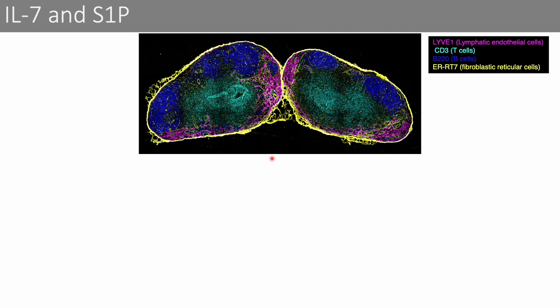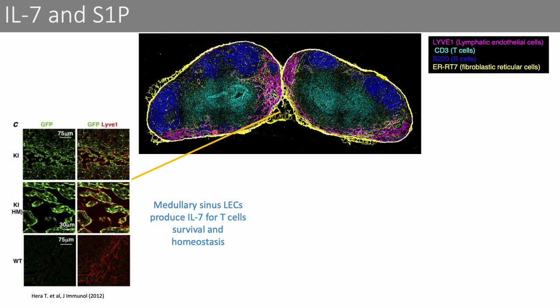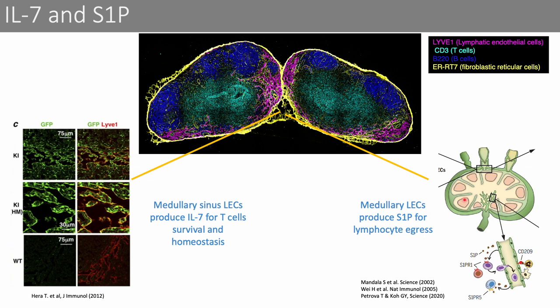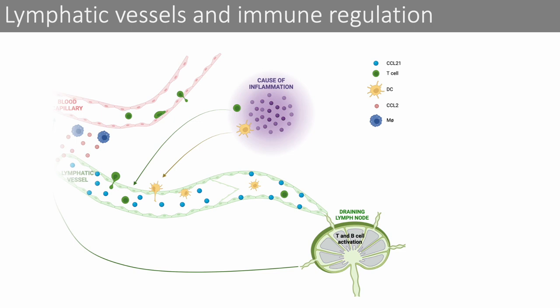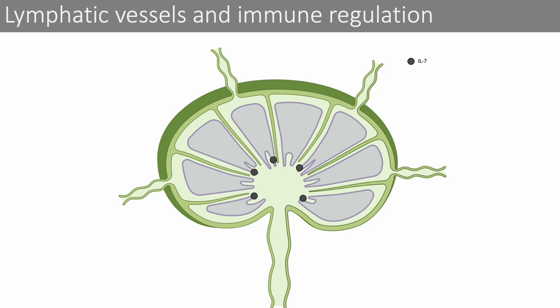In order for cells to exit the lymph node, they need to traverse and leave through the medullary sinuses, which are made up of LECs. They will enter the downstream efferent lymphatics, which eventually joins the bloodstream through the connection of major lymphatic ducts into veins. Early studies using a fluorescent reporter mouse showed that within the medullary sinuses, LECs produce interleukin-7, which is important to sustain T cell survival and homeostasis. In addition, medullary sinus LECs also produce S1P, a chemokine that binds S1PR1 on immune cells, allowing for egress out of the lymph node. Moreover, it was recently shown that S1P can also be produced by lymphatics in the periphery at the capillary ends, allowing T cells to enter the lymphatic circulation from the tissue.